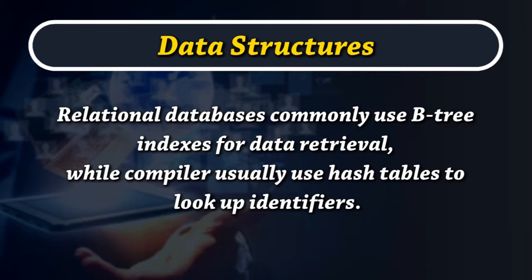Different kinds of data structures are suited to different kinds of applications. For example, relational databases commonly use B-tree indexes for data retrieval, while a compiler usually uses hash tables to look up identifiers.